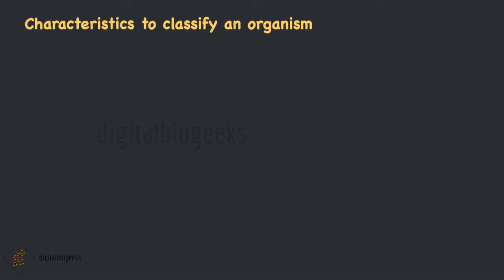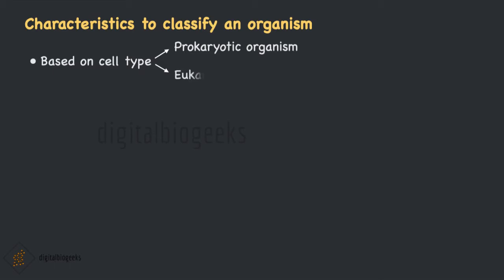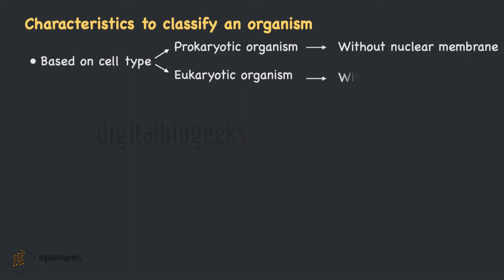Let's see how we can use characteristics to classify organisms. The first classification is based on cell type. Based on cell types, organisms can be divided into two: prokaryotic organisms and eukaryotic organisms. Those organisms which lack a membrane-bound organelles and a nuclear membrane come under prokaryotic cells. Organisms which have a membrane around their cell organelles and their nucleus come under eukaryotic cells and they perform specialized functions. Examples of eukaryotic organisms are plants and animals, whereas an example of a prokaryotic organism is bacteria.